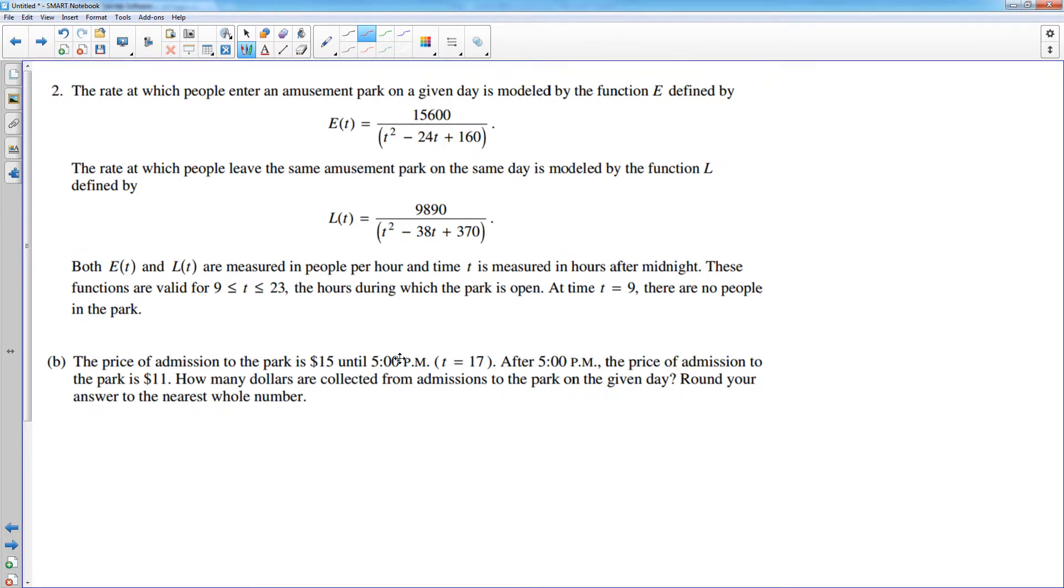Let's move on to number B. Same situation. Same functions. The price of admission is $15 until 5 p.m. After 5 p.m., the price drops to $11. And they want to know how much money is made on a given day. Well, in part A, we already figured out that from opening from T equals 9 to T equals 17, we already figured out that there were 6,004 people who entered the park. They paid $15 each.